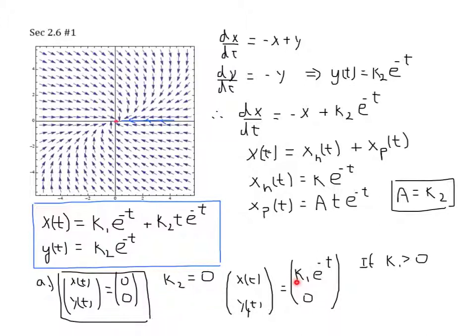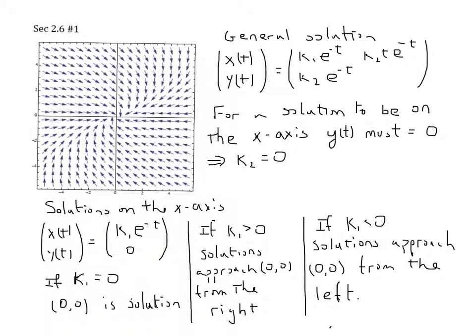Now, I've run out of room here, so I'm going to go to the next slide. Okay, on our next slide, I've filled in quite a bit. Recap shows that if we have the general solution I showed was of the form x(t), y(t) is k₁e to the minus t plus k₂t e to the minus t. And y(t) is k₂e to the minus t.